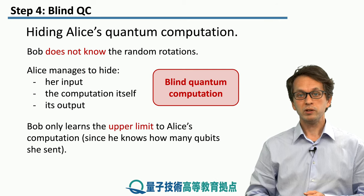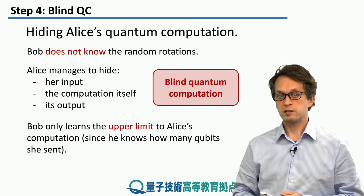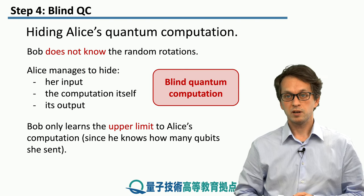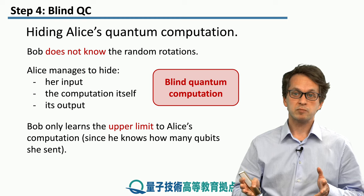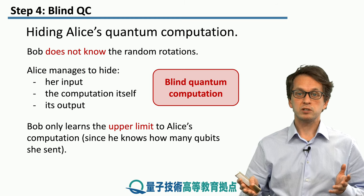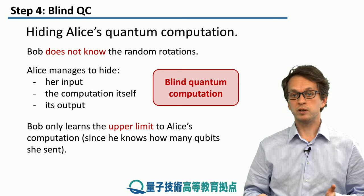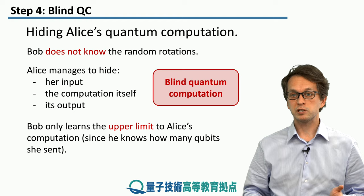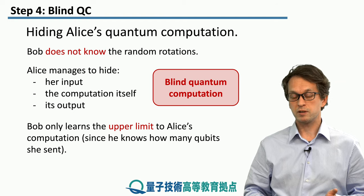The only thing Bob can learn is the upper limit to Alice's computation. For example, if she sends him four qubits, then he knows that Alice could not have performed any computation that requires more than four qubits.